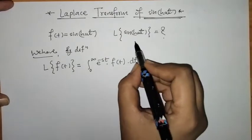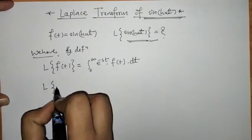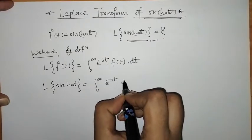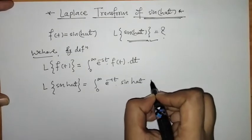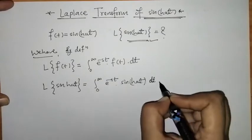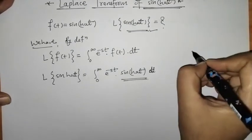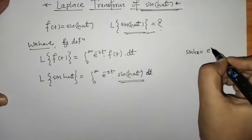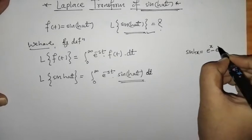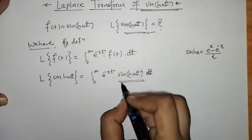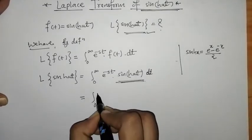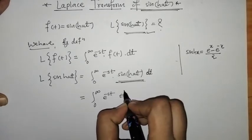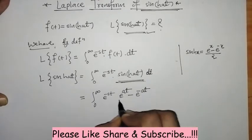So now we have to find the Laplace of sinh(at). We write the integral of e raised to minus st times sinh(at). We know that sinh(x) in exponential form is e raised to x minus e raised to minus x, all divided by 2. So we can write sinh(at) as e raised to at minus e raised to minus at, all divided by 2.